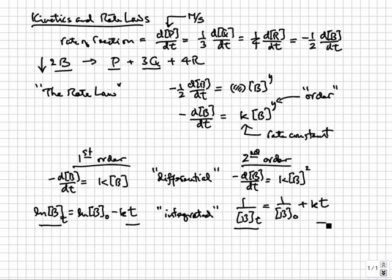If instead, 1 over B versus time gives you a straight line, the reaction is second order. For some reactions, the order is neither 1 nor 2. It could be 0 or even a fraction.